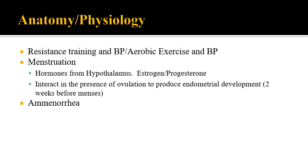Regarding menstrual dysfunctions, amenorrhea is the absence of menstruation, broken down into primary and secondary. Primary amenorrhea is when the first menses fails to occur by age 16. Secondary amenorrhea is when an individual has fewer than three cycles per year or lacks menstruation for three consecutive months. This could be due to pregnancy, endocrine disorders, or malnutrition.